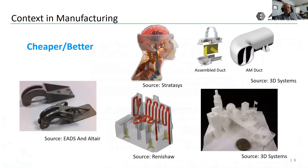Additive manufacturing is used relative to other conventional manufacturing processes really for two reasons: one, because it's cheaper than alternative conventional manufacturing processes, or we can actually make better parts — that is, we can improve the performance of an object in service. For cheaper, additive manufacturing really shines for parts that are complex in geometry, produced in small production runs — typically 100 or less — and parts that have relatively small volumes.